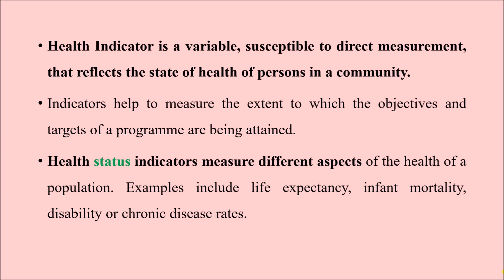Indicators help us measure the extent to which the objectives and targets of different health programs are being attained — basically, where we are right now versus where we want to be. This also tells us about the efficiency of ongoing health programs. For example, if our target is to achieve a maternal mortality ratio of less than 100, and right now we have about 120, that means we still have to decrease it further.